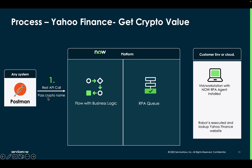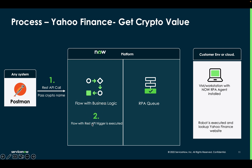The REST API call I'm going to make will pass the crypto name, and that name will be used by the robot to look up the value on the Yahoo Finance website. I've decided to create a workflow with an API trigger. When creating the workflow, I can add business logic and decide how it's triggered. Note that I'm not calling the RPA robot directly from the API — you could do that, but I find it easier to put business logic in the workflow engine rather than in the robot automation. In my opinion, any business logic should be handled at the workflow engine level.